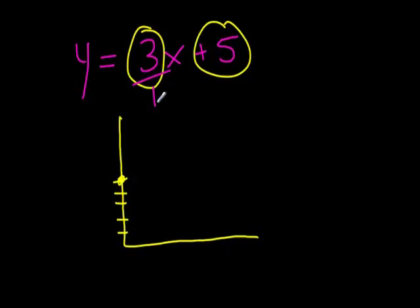So, anyway, 3 over 1, 1, 2, 3 up, and 1 across, right there. This graph is going to go this direction, right there. We've just graphed it. OK?